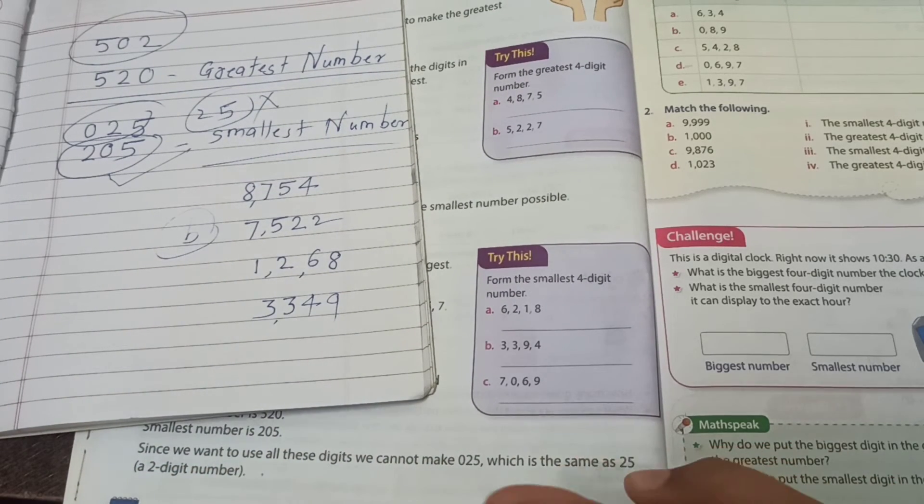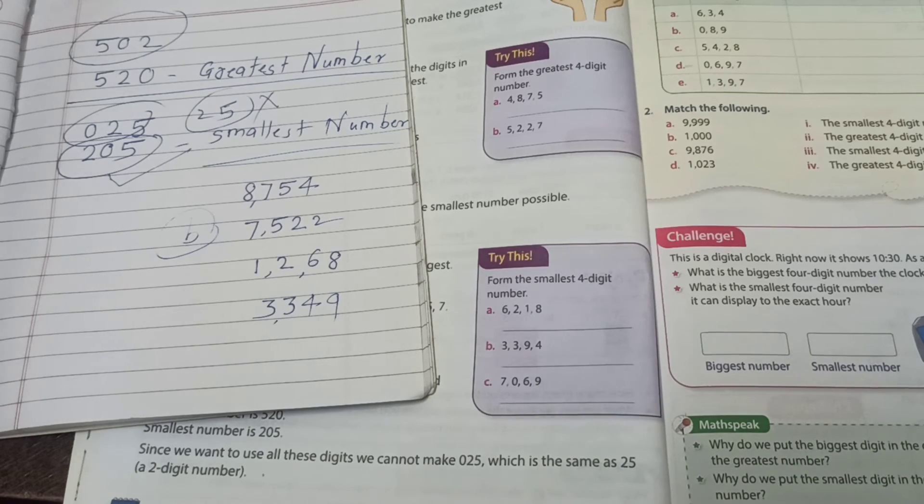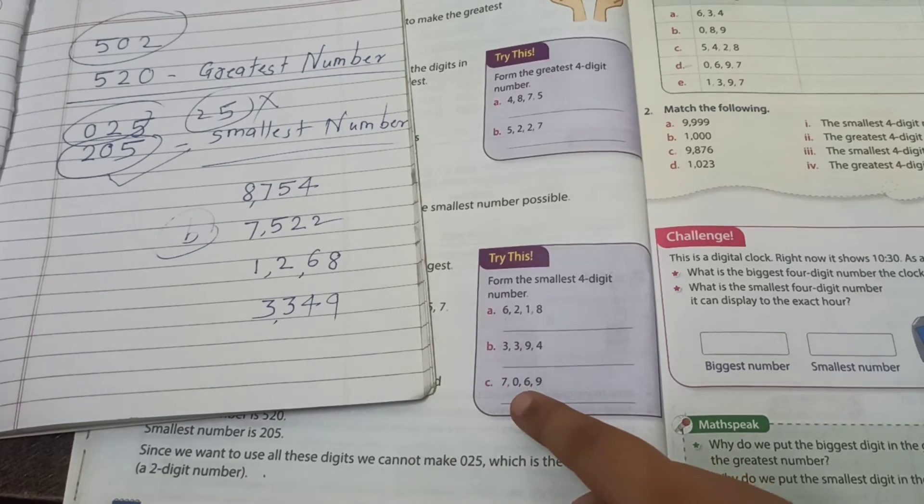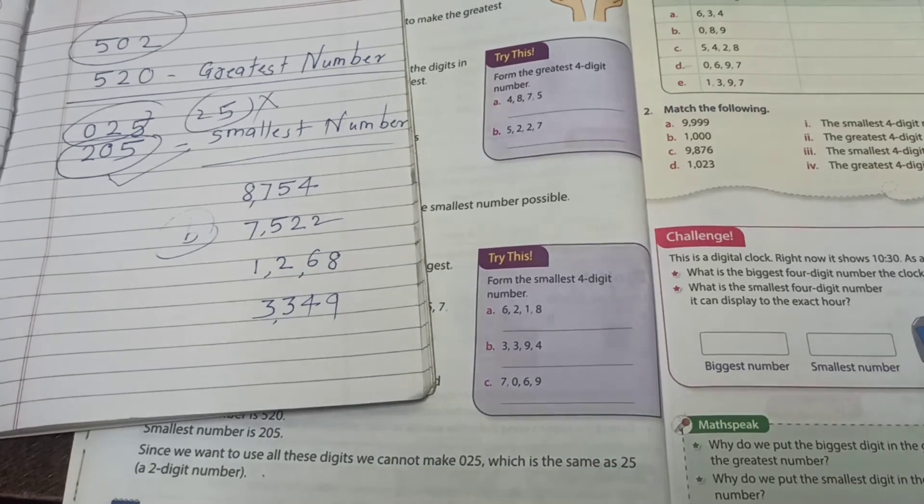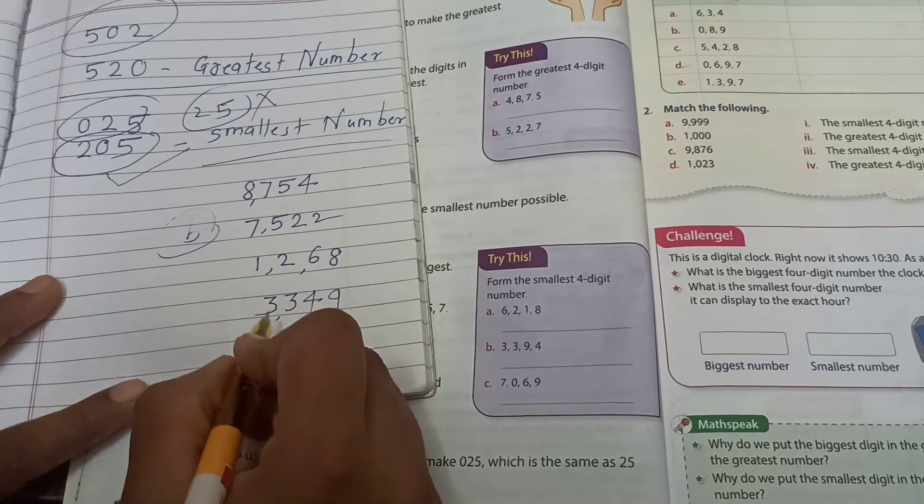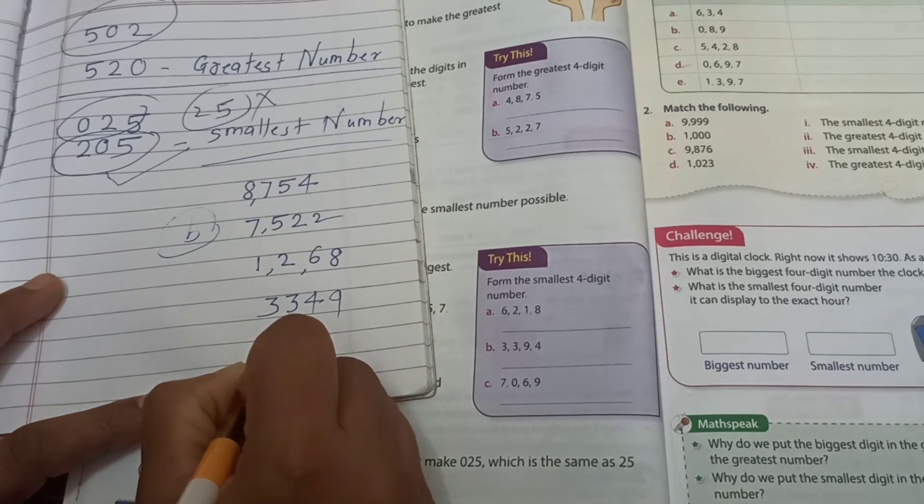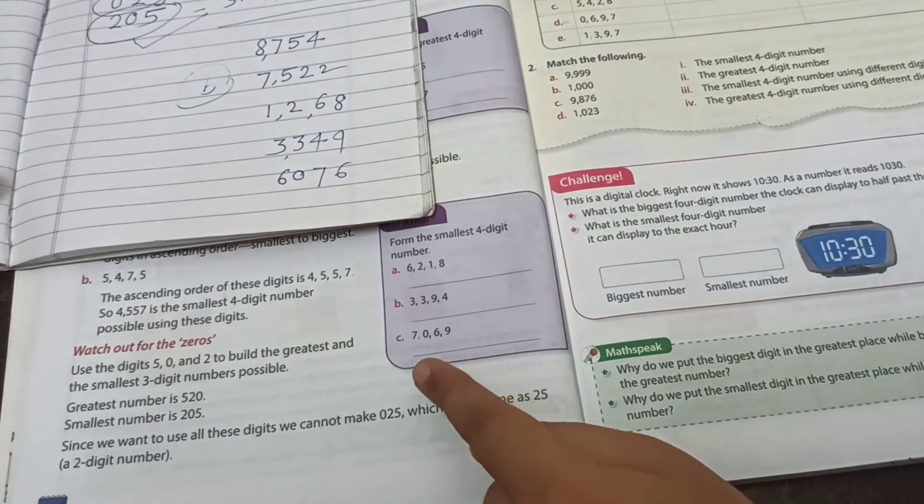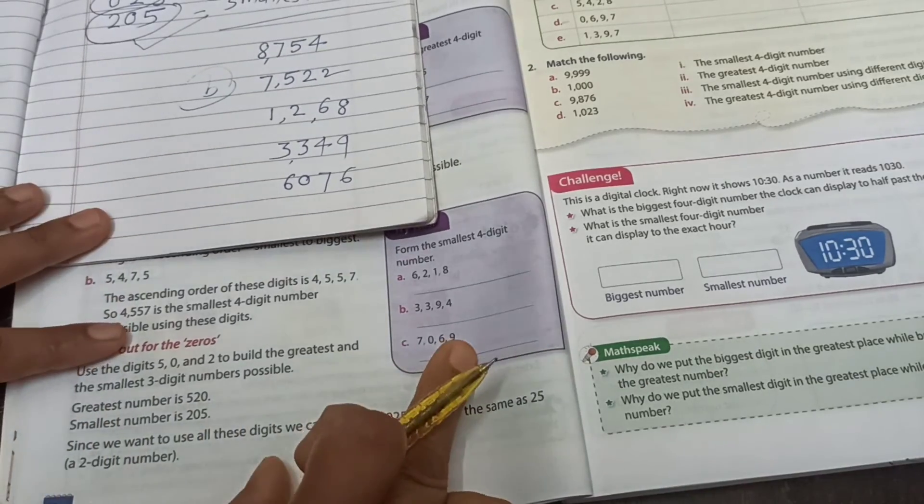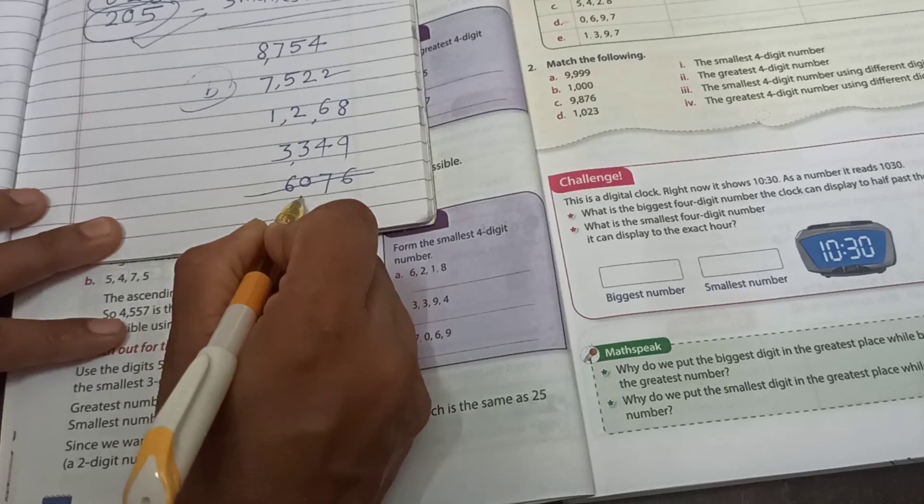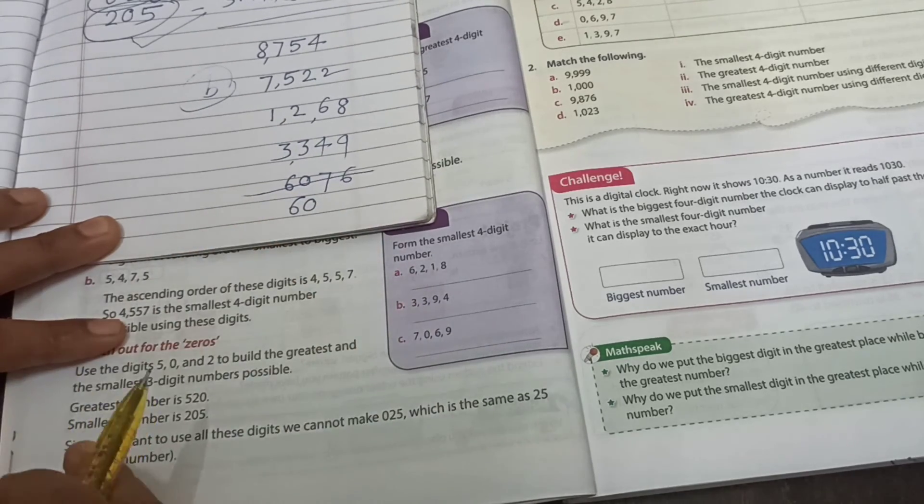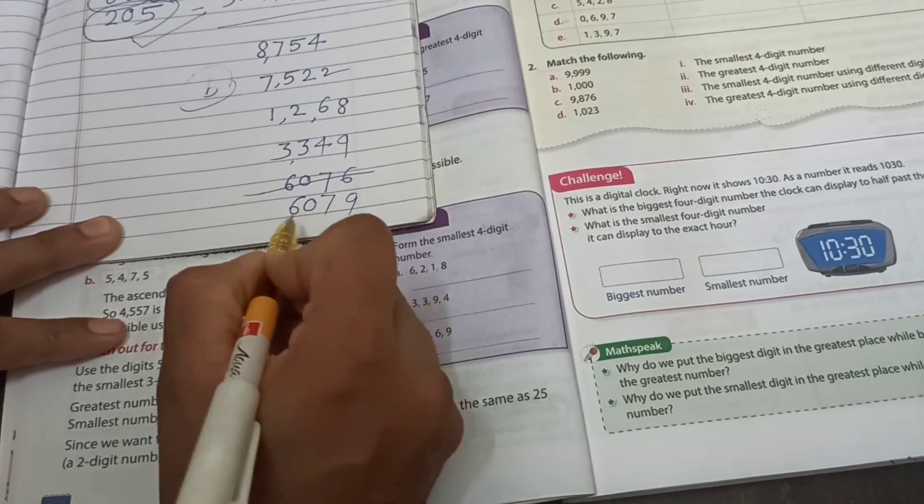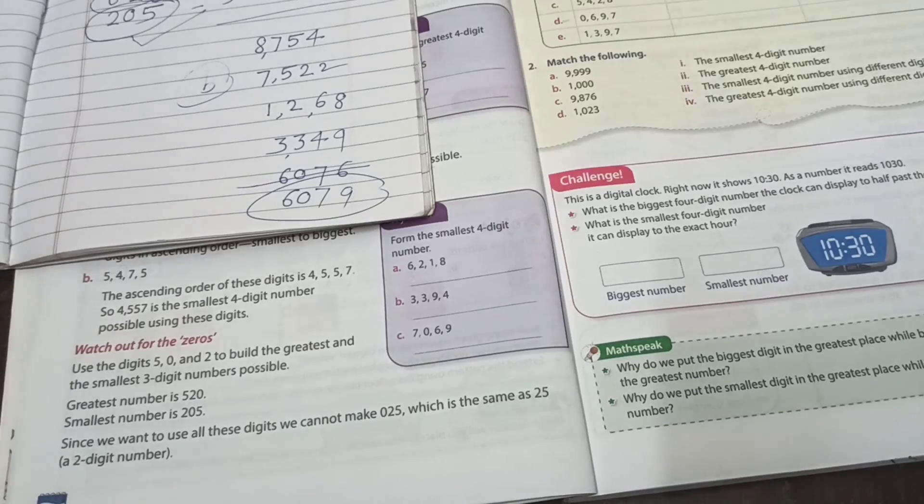And last one Parnavi, don't use first zero. Okay, yes. Six, zero, seven, nine. Very good. See, 6079. This one our smallest number.